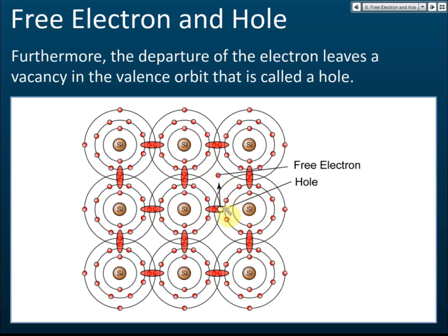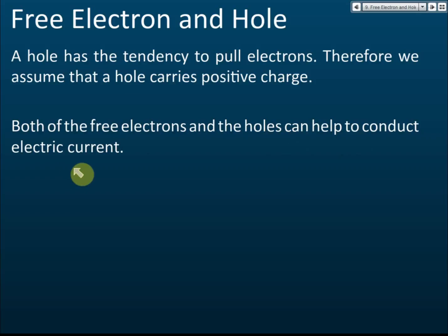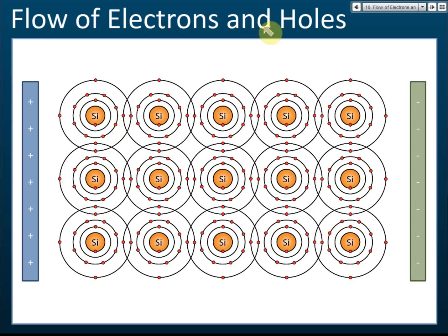When temperature increases, electrons absorb heat energy, jump out to become free electrons, and leave holes in the valence orbit. A hole has a tendency to pull electrons to fill it, so we assume a hole carries positive charge. Both the free electrons and the holes are charge carriers that help conduct electric current.